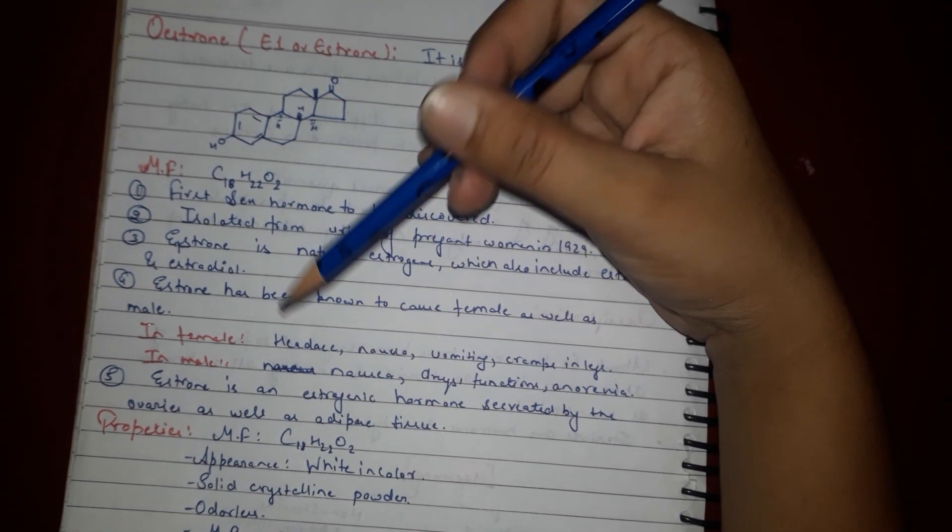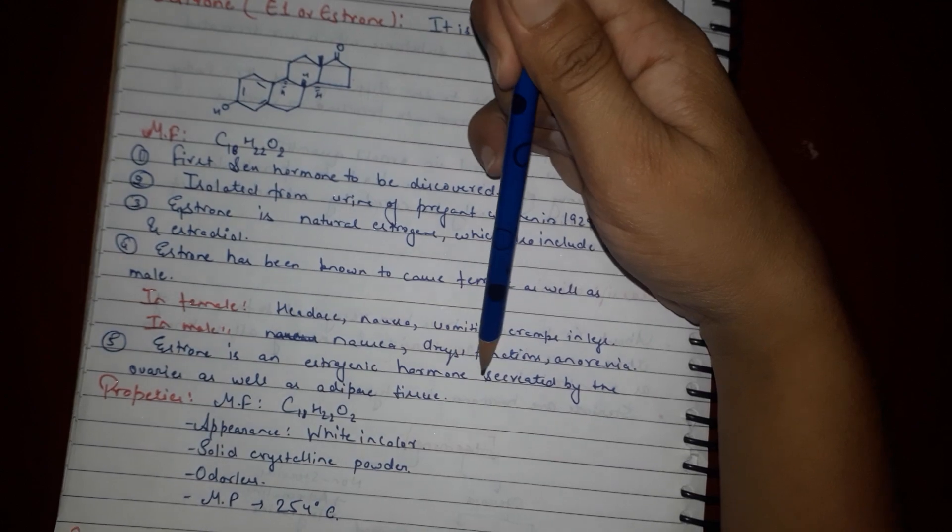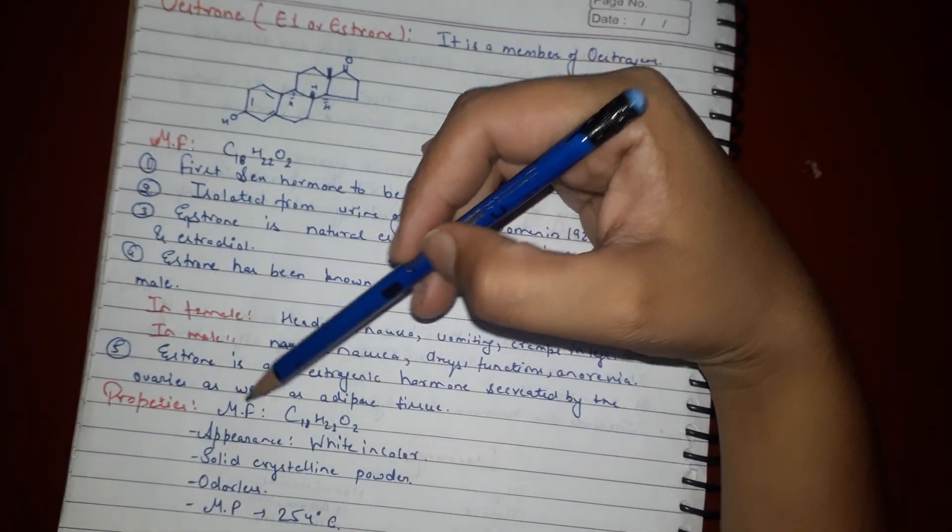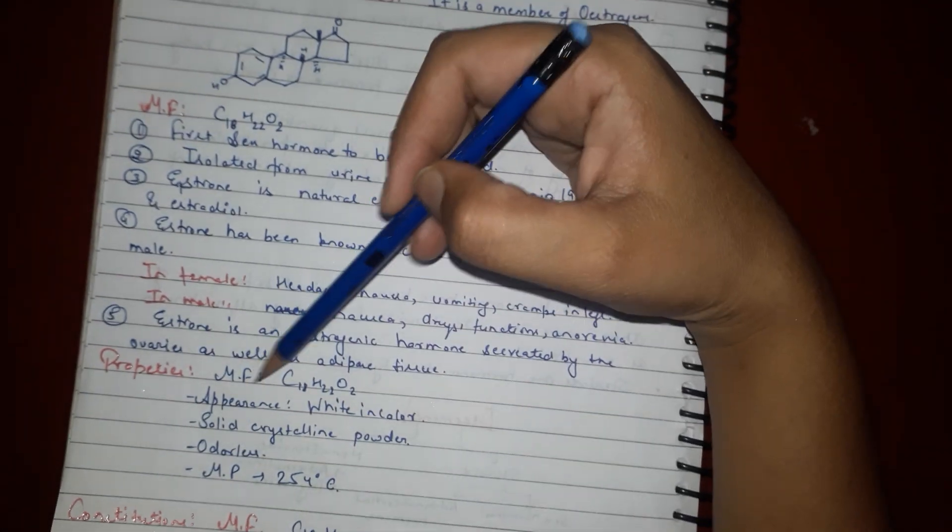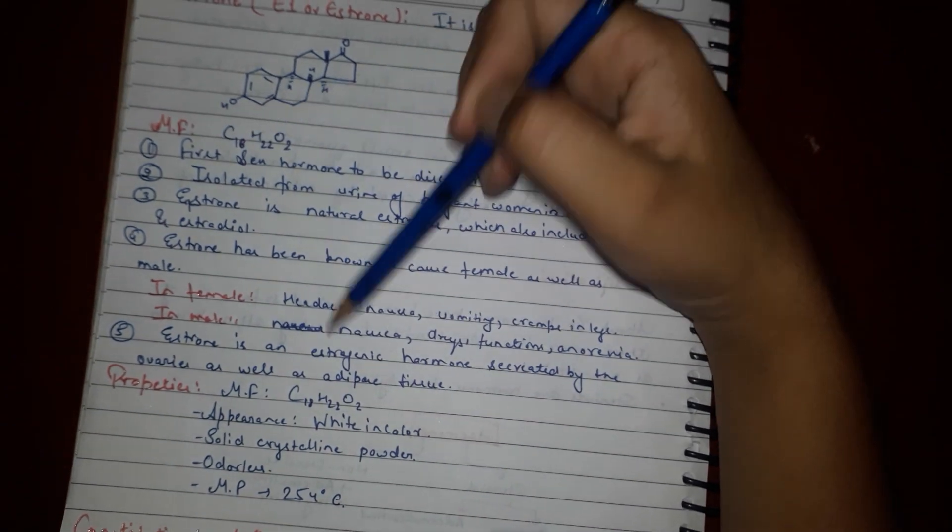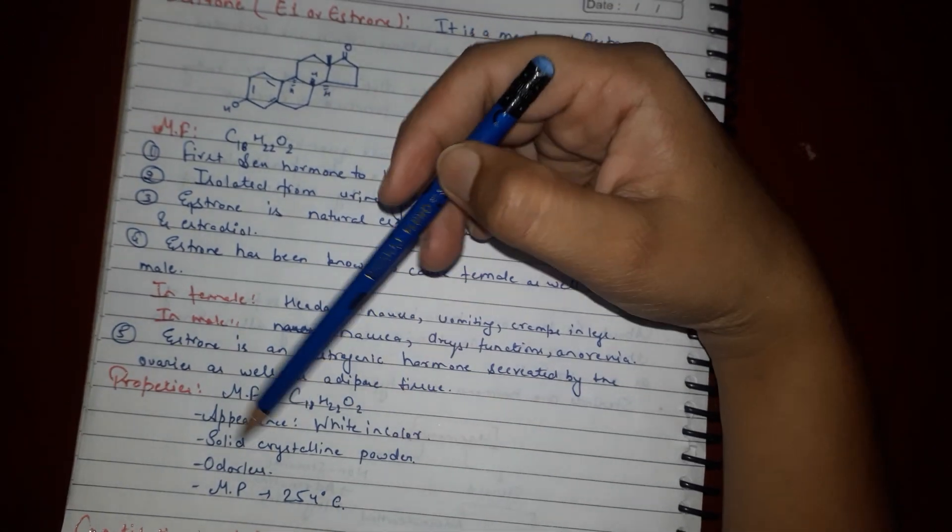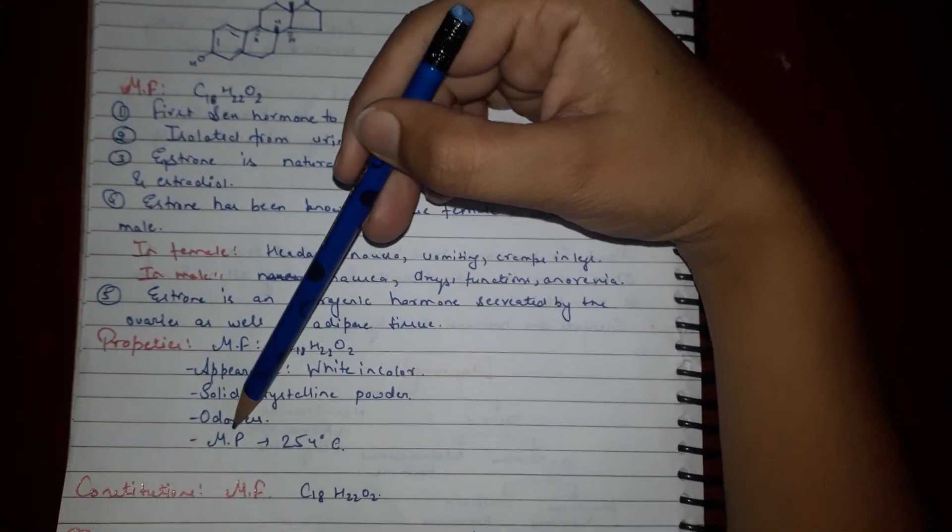Estrone is an estrogenic hormone secreted by ovaries as well as adipose tissues. Properties: molecular formula as I told C18H22O2, appearance is white colored solid crystal powder, odorless, melting point 254 degrees Celsius.